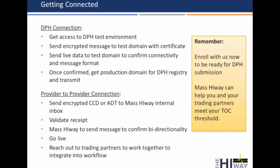So depending on your use case, getting connected to the Mass Highway is going to look a little bit different, but the overview is generally the same. We first need to confirm your connectivity in a test environment, and once that's completed, we move that connection into production — or go live with your connection. Once that's confirmed, you're ready to implement your use case and start integrating the highway into practice.